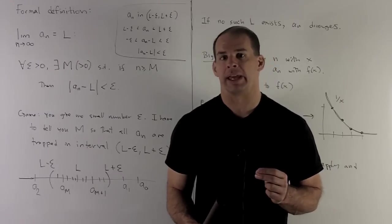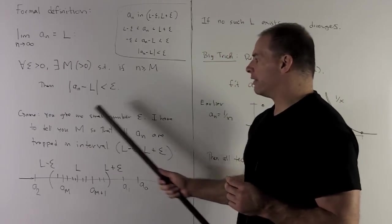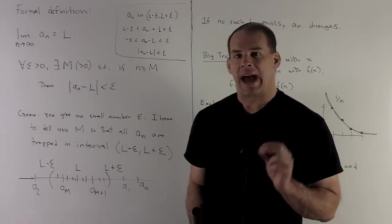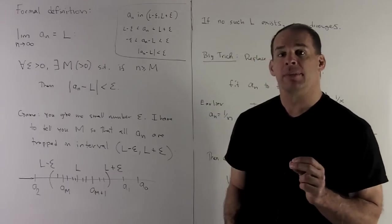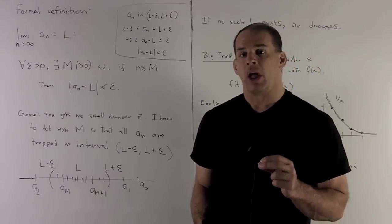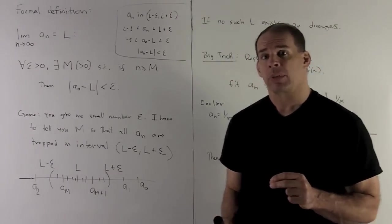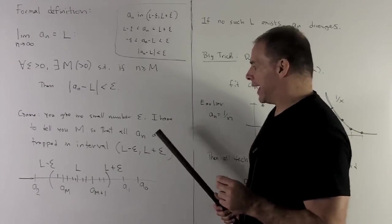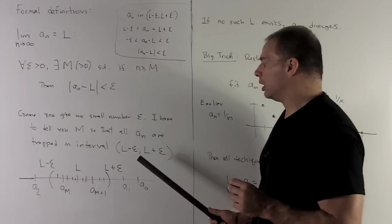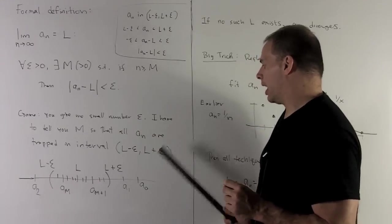So what's the game we're playing? You're going to give me a small number epsilon. What I have to do, I have to tell you an m such that for all a sub n with their labels n bigger than m, we're going to have to have that these a sub ns are trapped in the interval L minus epsilon, L plus epsilon.